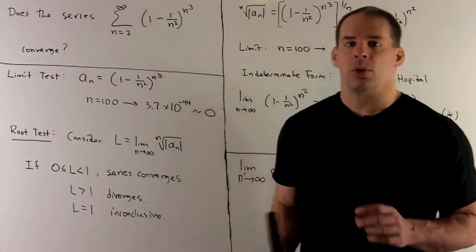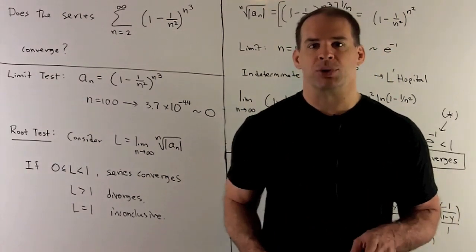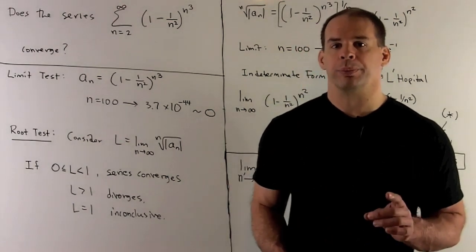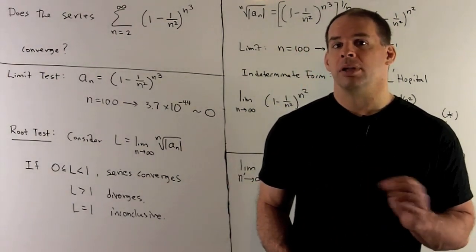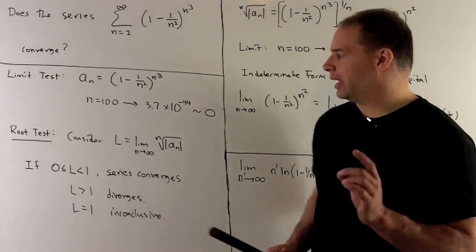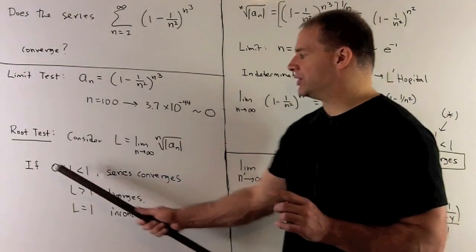We're going to take the limit as n goes to infinity. We're going to take our general term, take its absolute value, and then take its nth root. Take a look at what comes out.